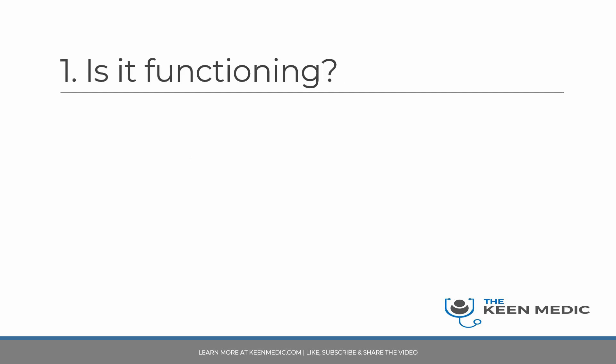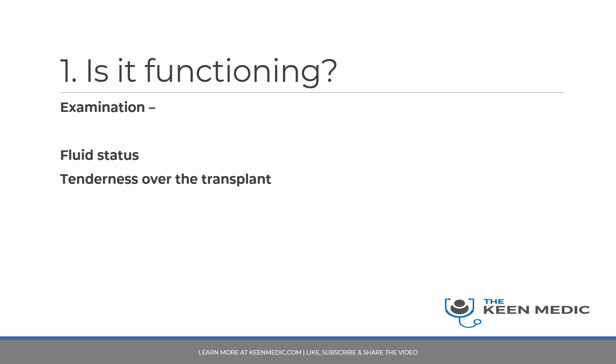How do we check if the transplant is functioning? We start with history, then examination, then investigations. When examining, fluid status is important: if the patient is fluid overloaded with no background of heart failure, this could indicate a failing transplant and may mean they need acute renal replacement therapy — dialysis.